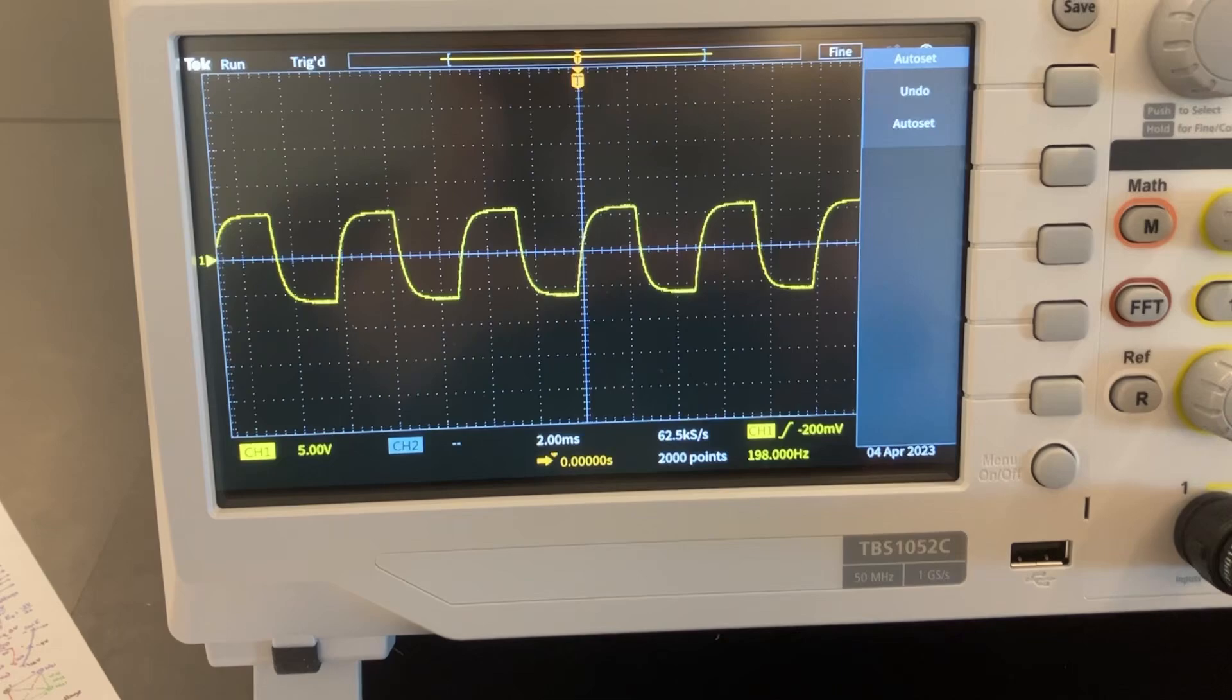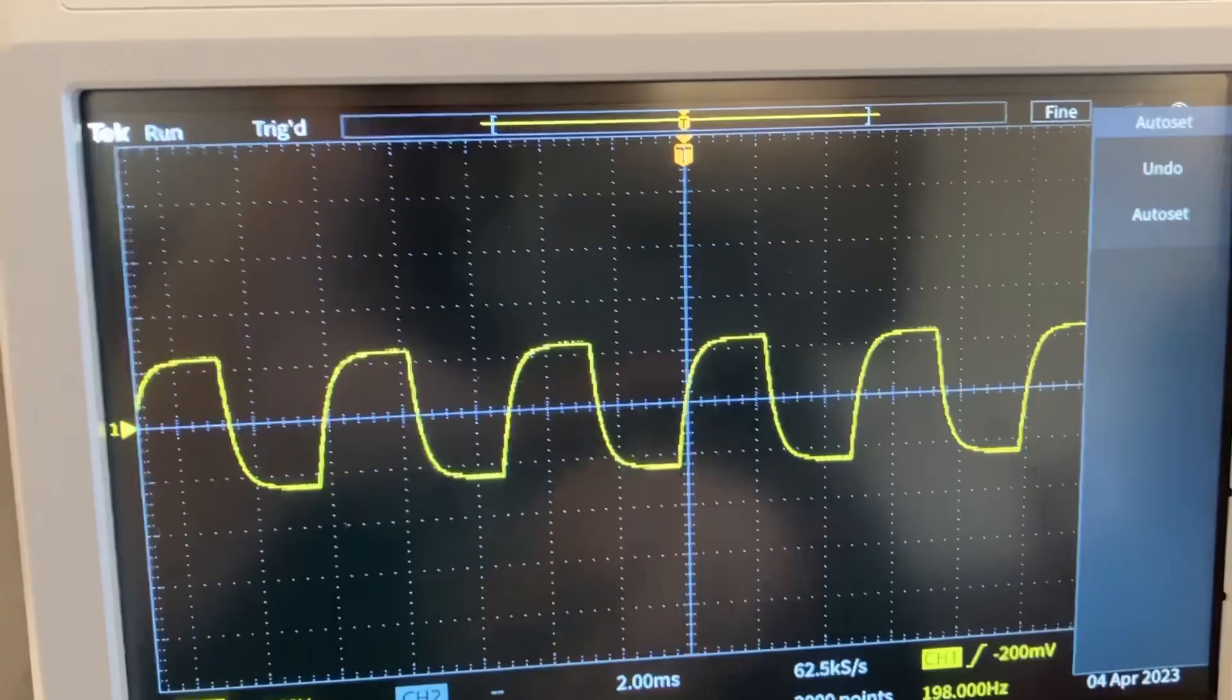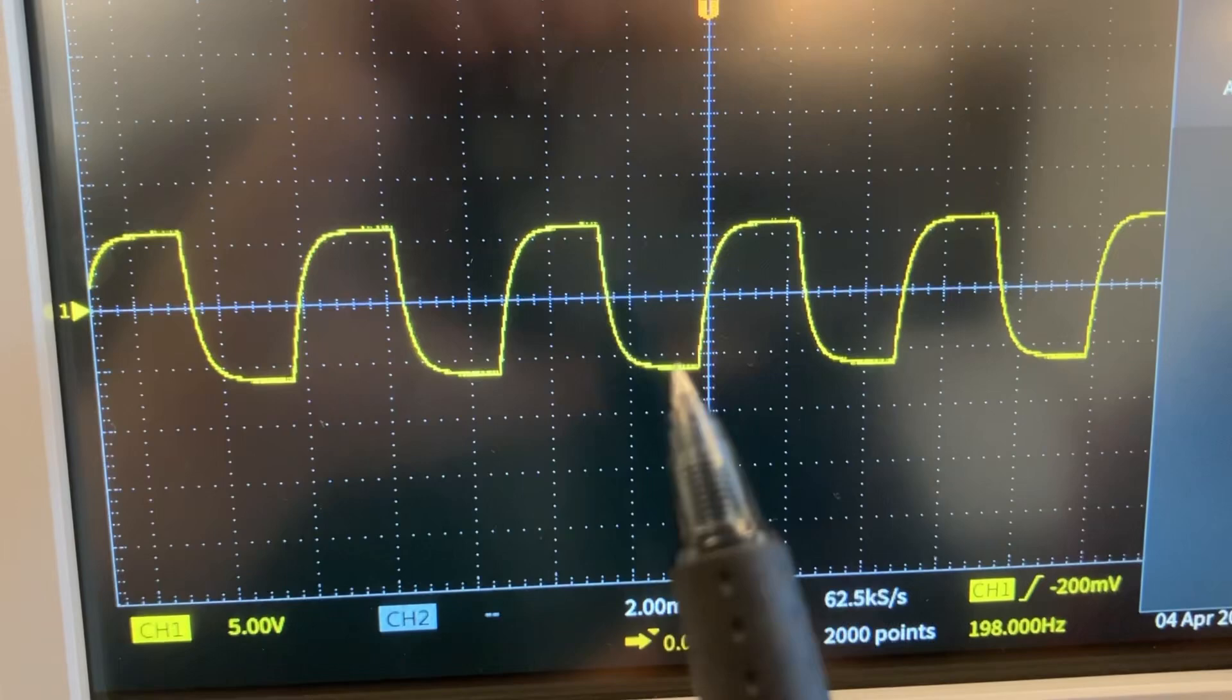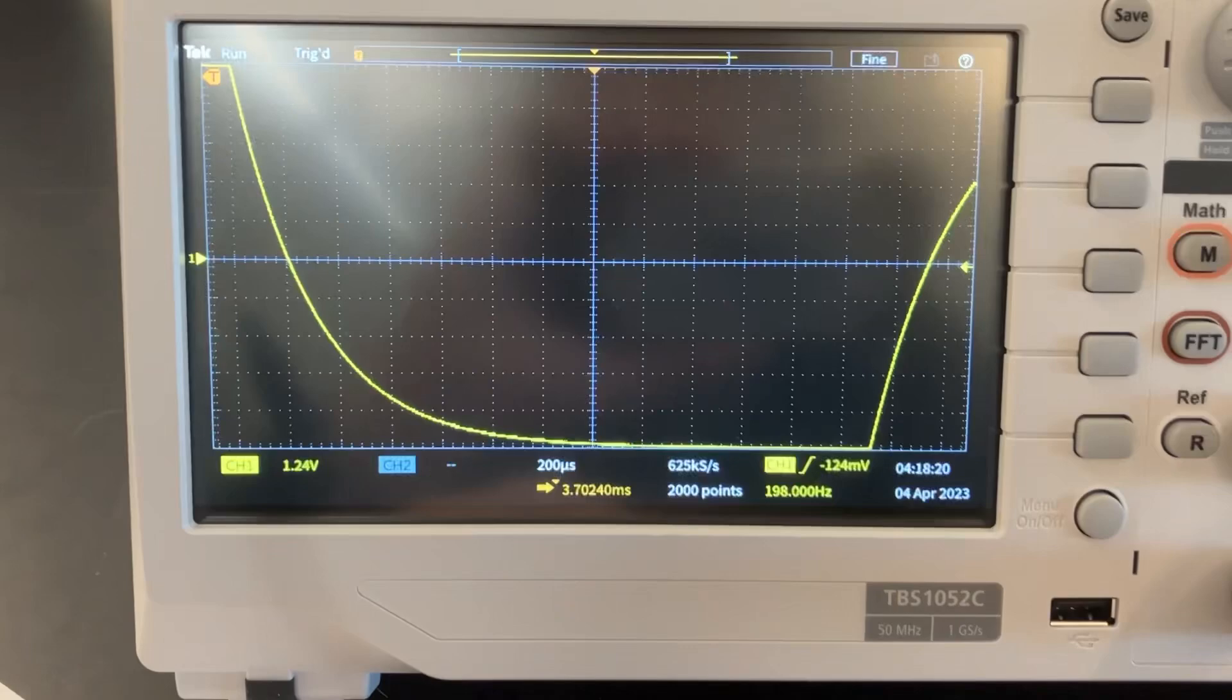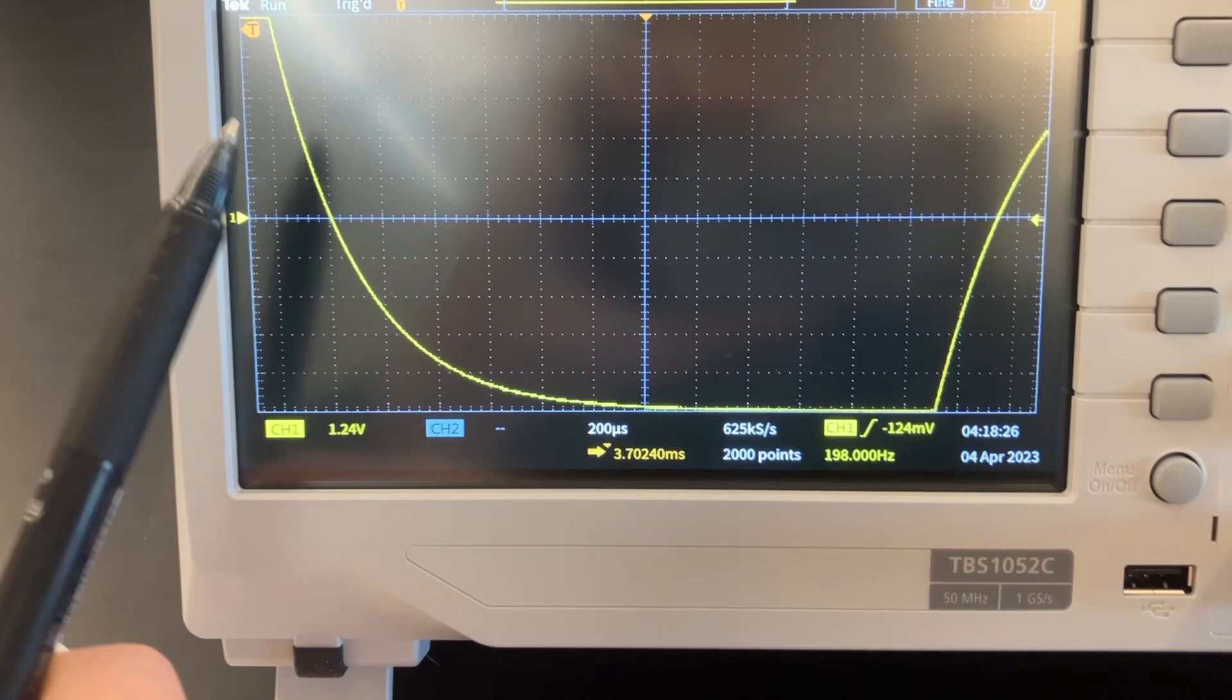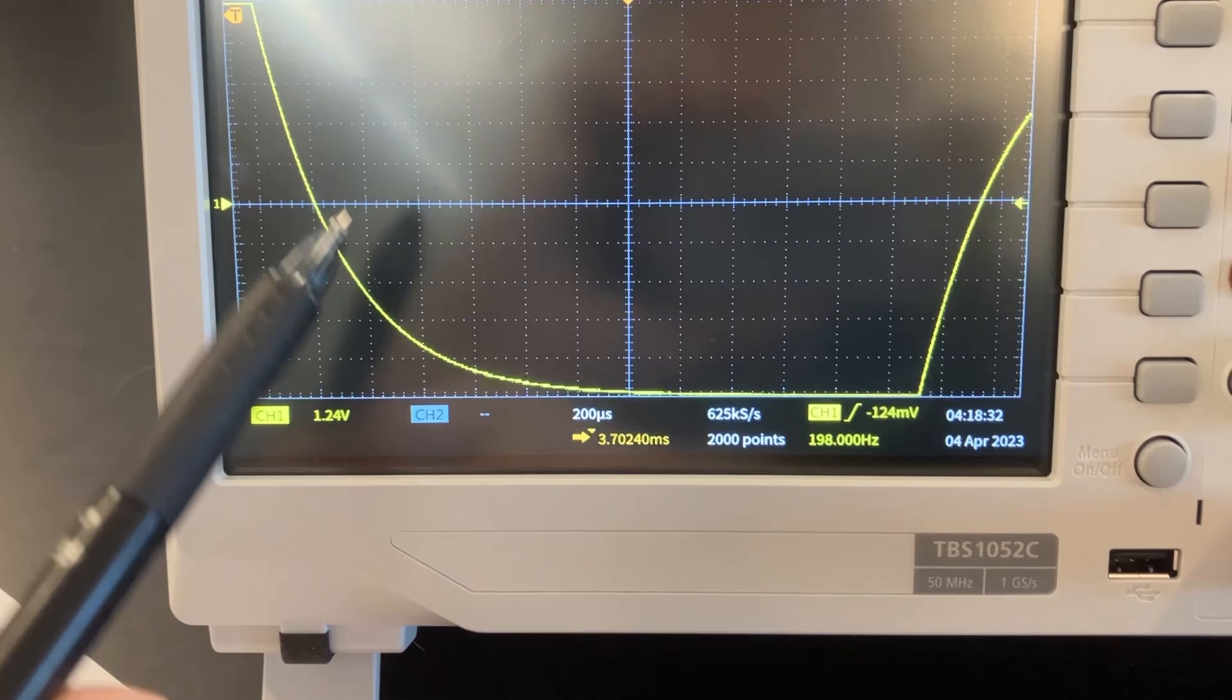What's really important is to notice these flat areas right here. When it's actually flat, that means it's done charging for this period of time - it's not doing anything. Same thing over here - it's done discharging. Those flat lines are important. Now we're going to find seven points on this curve that line up with these creases.